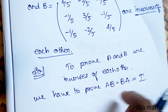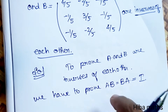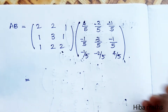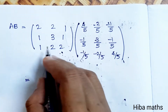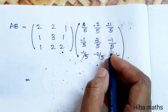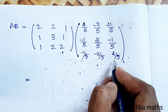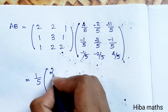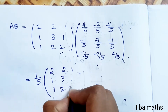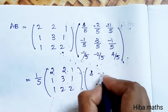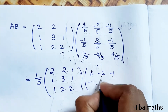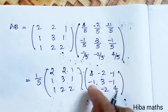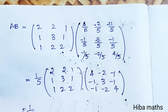If we have to prove this, we take 1/5 in common. We are multiplying [2 2 1; 1 3 1; 1 2 2] into [4, -2, -1; -1, 3, -1; -1, -2, 4]. We go 1 by 5.